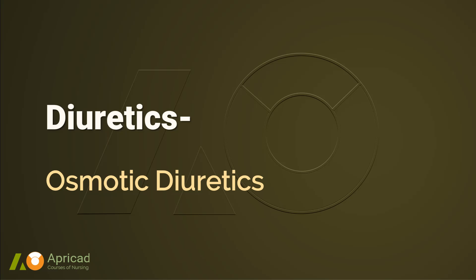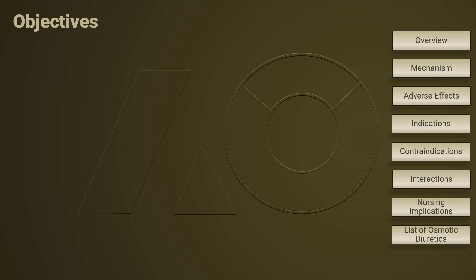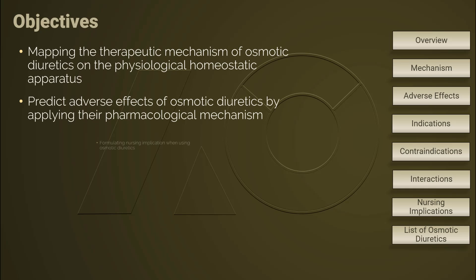In this retrograde journey from collecting tubule toward the proximal convoluted tubule, we are going to discuss osmotic diuretics in this lecture. Osmotic diuretics take effects at the descending loop of Henle. This is the list of objectives for this lecture.